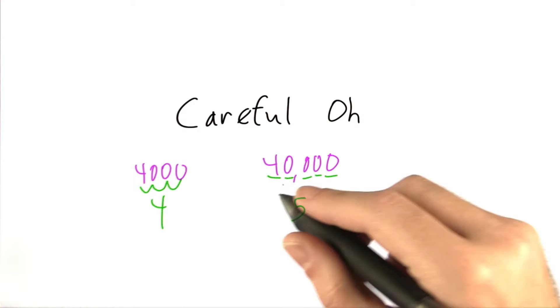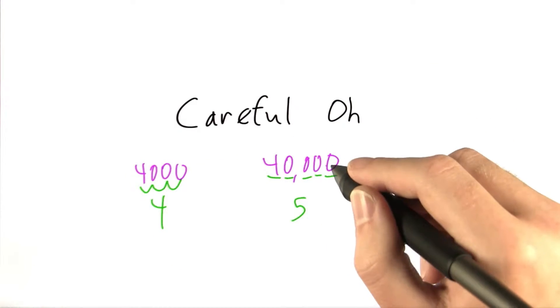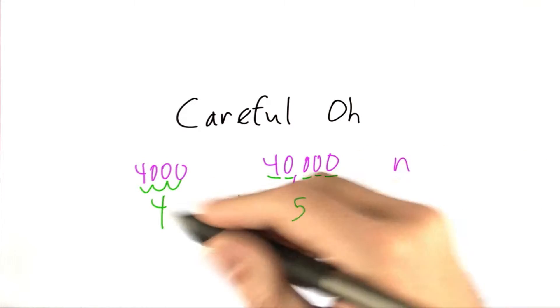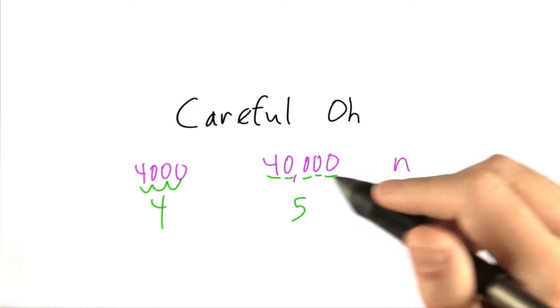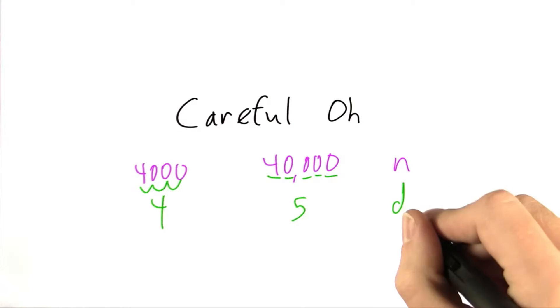Now, let's say we call the actual number we want to represent n. And let's say the number of digits necessary to represent n, we'll call d.